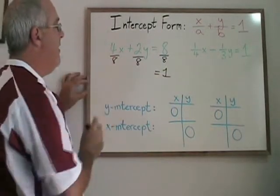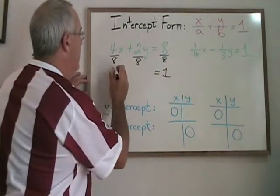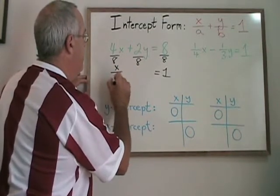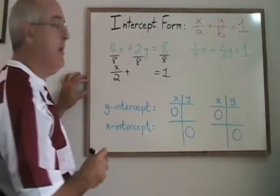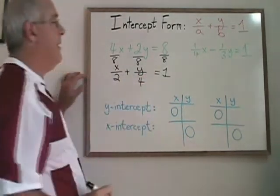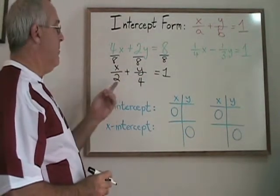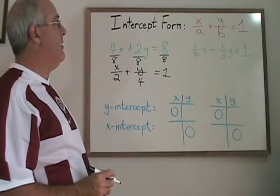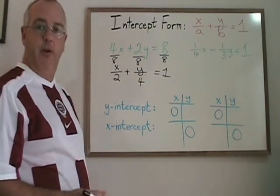4 eighths x can be expressed as x over 2, and 2 eighths y can be expressed as y over 4. By doing this little bit of algebra, we have now turned our equation into an intercept form version of the same equation.